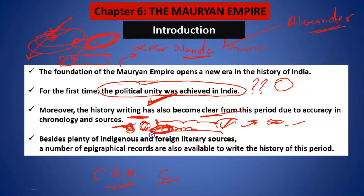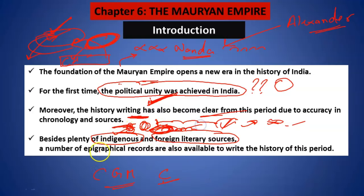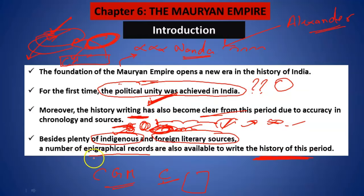Now there are numerous resources, apart from our indigenous resources, through which we have come to know about this period. Apart from the books written by Indian people and foreign people, there are a number of epigraphical records also available through which we know about the Mauryan people. Kahi epigraphical records bhi likhe gaye hain, jiske karan se humko Mauryan samrajye ke itihaas ka pata chalta hai.